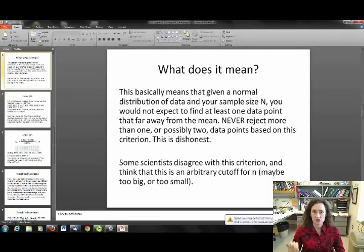Also, if you don't expect your data to obey a Gaussian distribution, then you should not use this criterion. For example, if you're doing some kind of experiment on radioactive decay, then that's not going to obey a Gaussian or normal distribution, and so you shouldn't use Chauvenet's criterion. You should also know that some scientists disagree with this criterion and they think that n less than one half is sort of an arbitrary cutoff, that it might be too big or too small. So this is, like I said, somewhat controversial.